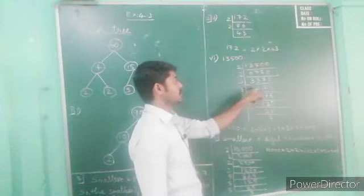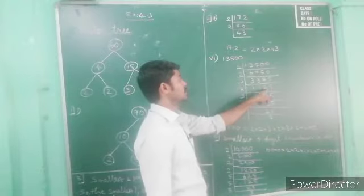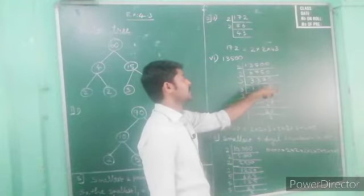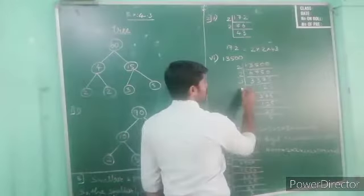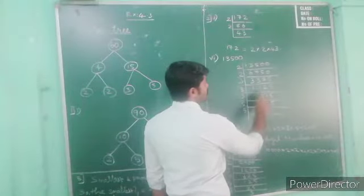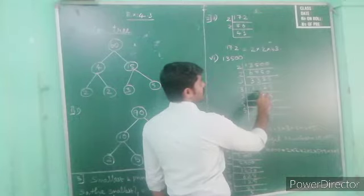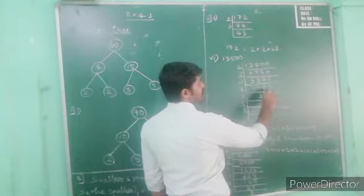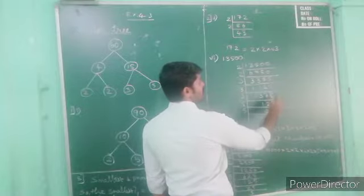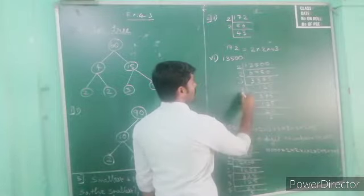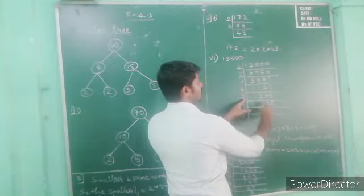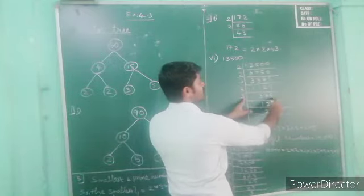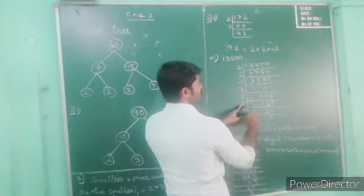Again divide by three: three threes are nine, bring down gives twenty-two, seven threes are twenty-one, one remaining gives fifteen, five threes are fifteen. Again divide by three: three ones are three, three twos are six, one remaining fifteen, five threes are fifteen. Now we have 125, which we have to divide by five.